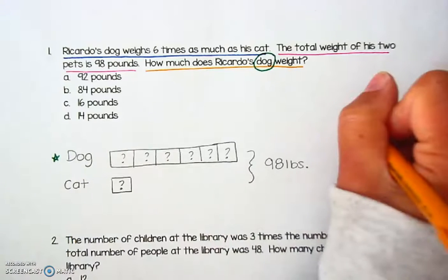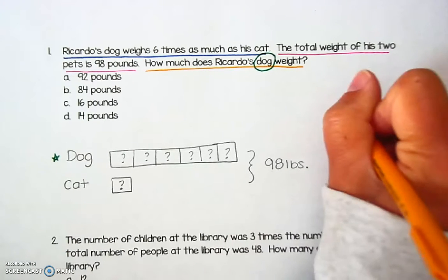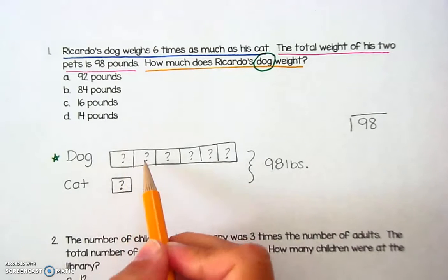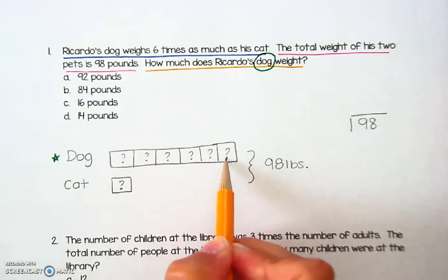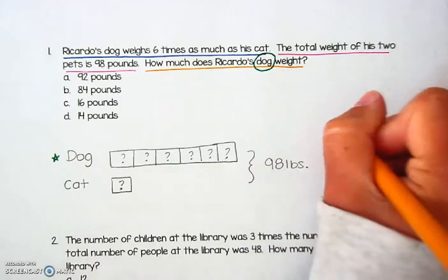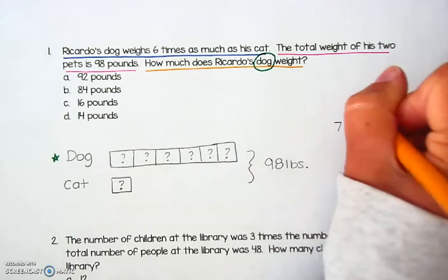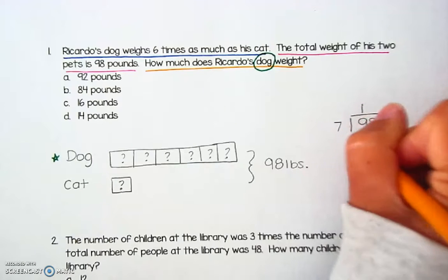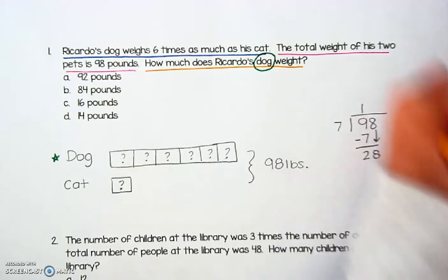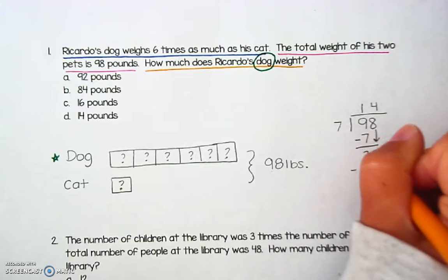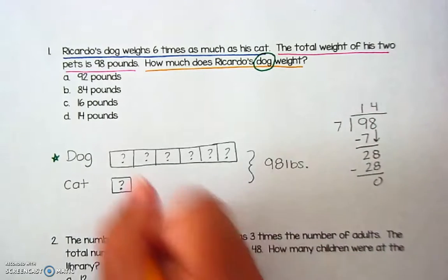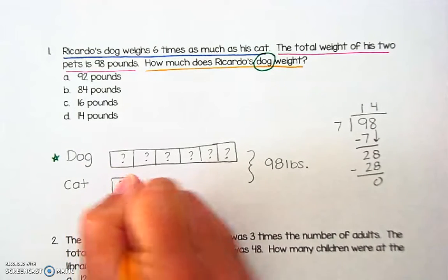I can take that 98 and divide it by all of the groups I see here. That means I'm dividing it into not just six groups shown for the dog, but seven total groups because I also have one group for the cat. Seven can fit into 9 one time. One group of seven is seven. Subtract, I'm left with two. Bring down the eight. I can make four groups of seven out of 28. That is exactly 28, and I'm left with zero. So that means my mystery number equals 14 pounds.